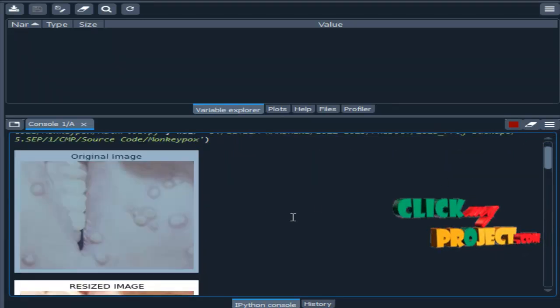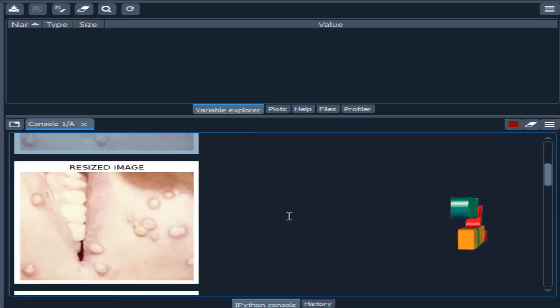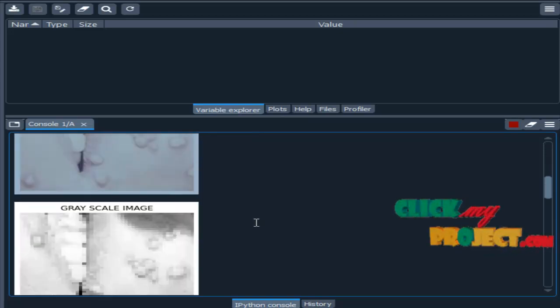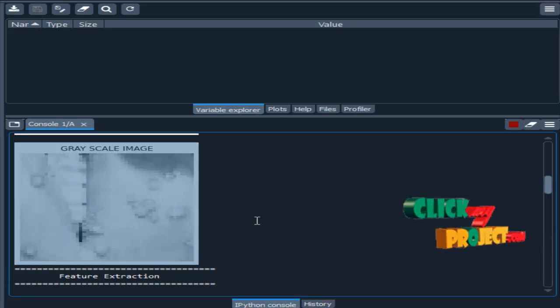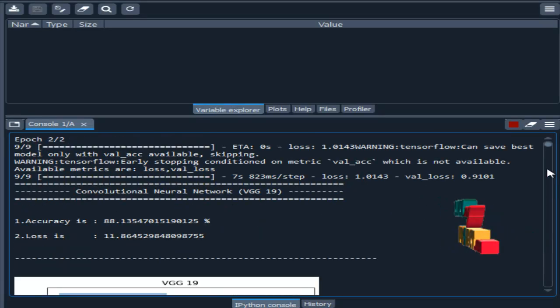This is the original image we have chosen from the dataset. And resized the original image. And grayscale conversion means just convert your RGB into black and white.